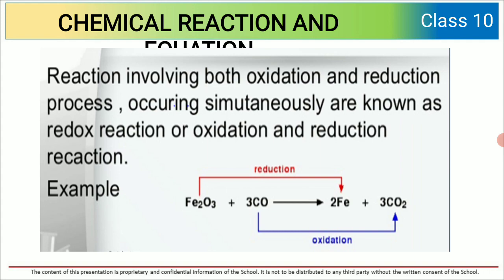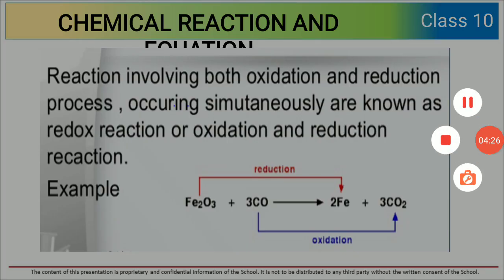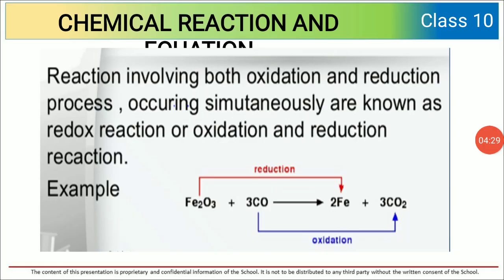Reactions involving both oxidation and reduction processes occurring simultaneously are known as redox reactions. For example, Fe2O3 + 3CO gives 2Fe + 3CO2. Here Fe2O3 is reduced to Fe, and CO gains one more oxygen to become CO2, so it is oxidized. Children, I hope you are all clear with the concept of redox reactions.